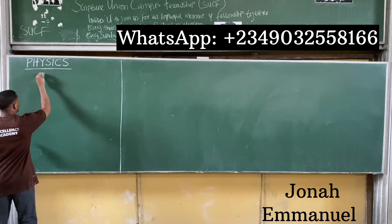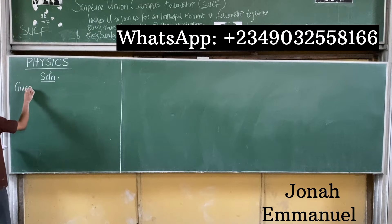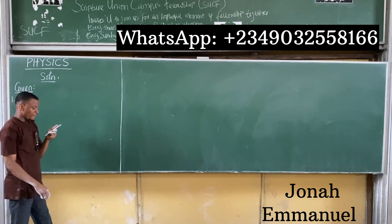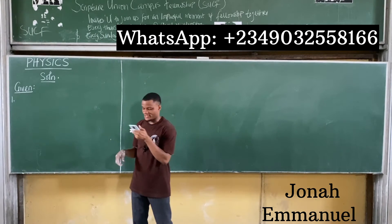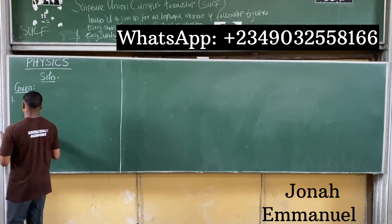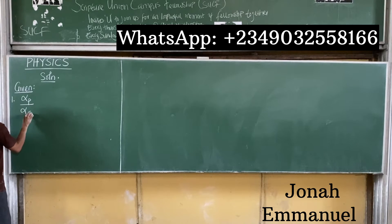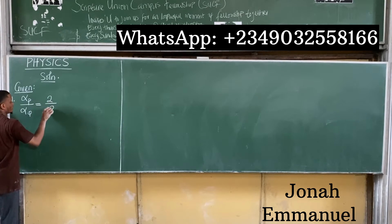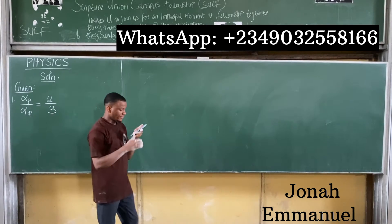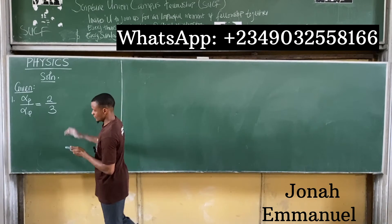Let's get this done. As usual, let's list out the given parameters. They said the ratio of the linear expansivity of P to Q — expansivity is alpha — so alpha_P over alpha_Q is equal to 2:3, which is 2/3 in mathematical form.